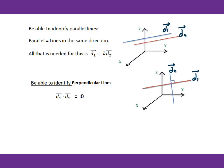Now let's go over some more concepts for this section. You really need to know how to identify parallel lines. When we have two vectors, I can write vector D1 equals K times vector D2, where K is any real number. Then we can conclude that D1 is parallel to D2. If the dot product of vector D1 and D2 equals 0, it means these two vectors are perpendicular to each other.